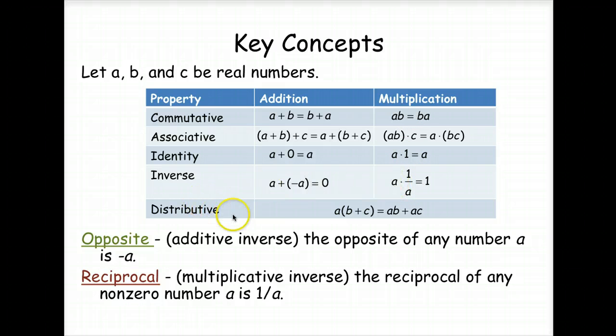And then distributive property is whatever's on the outside of the parentheses, you're going to distribute it or multiply it by everything inside the parentheses. The additive inverse is also known as the opposite, and the multiplicative inverse is known as the reciprocal of a number.